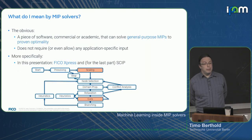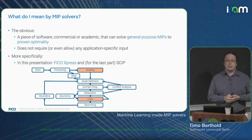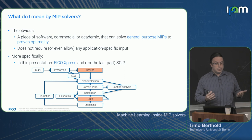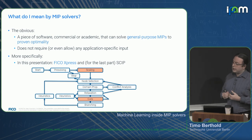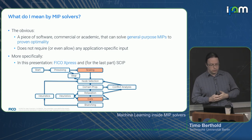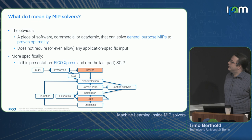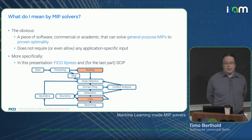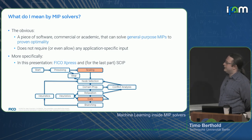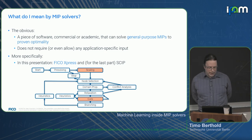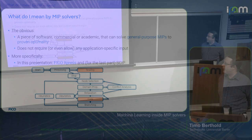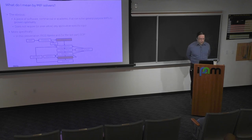By MIP solvers, I mean software that solves these problems to prove optimality — we won't consider heuristic approaches. Also, and this is key, we don't allow any application-specific input, so the solver is essentially treated as a black box: problem in, solution out. How can we use ML in between to make this faster? Specifically, I will use FICO Xpress most of the time, and in the last section, some results compiled with SCIP. We'll look at two parts of the MIP solving loop: scaling in the first half and cutting planes in the second.